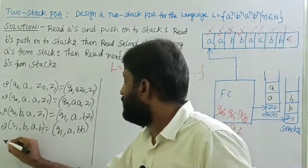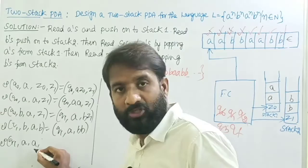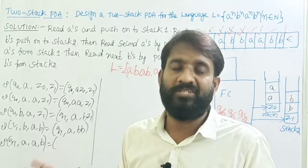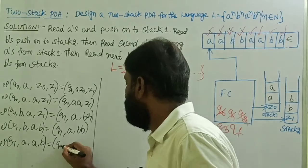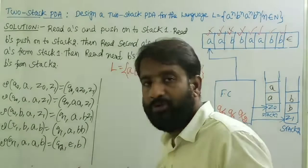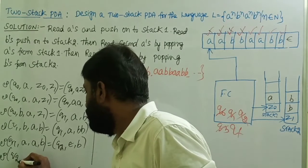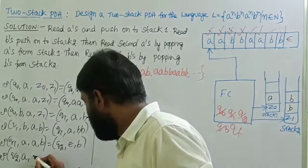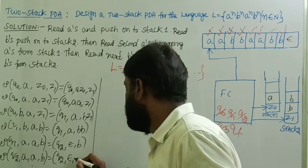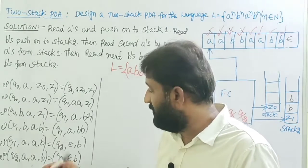Transition of q1 with input 'a': the second a's have started. Top of stack one is 'a', top of stack two is 'b'. Change state from q1 to q2 and do a pop operation on stack one without doing any operation on stack two. That is: δ(q1, a, a, b) = (q2, ε, b) — 'a' is removed from stack one. Then for one more 'a': transition of q2 with input 'a', top of stack one is 'a', top of stack two is 'b' — do the pop operation, remain on the same state q2, no operation on stack two. If there are more a's, repeat the same transition.